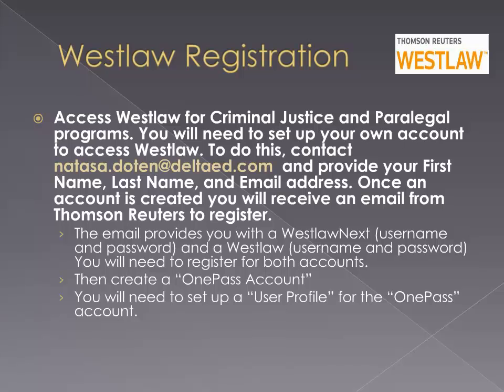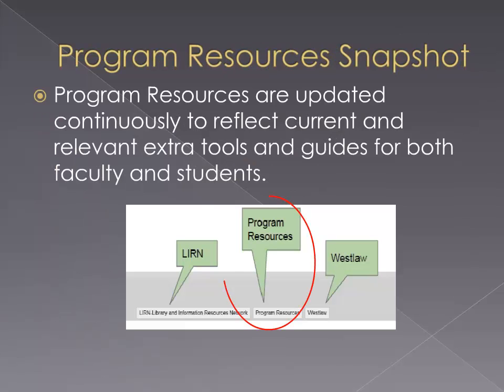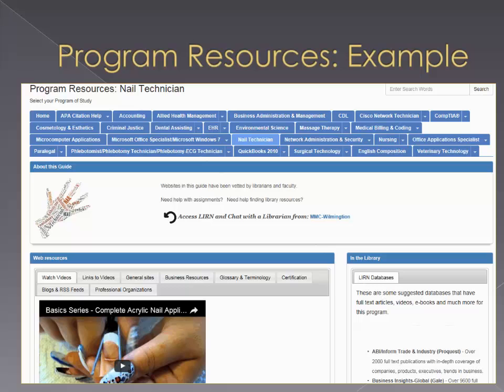Now that we have discussed all the research databases offered to you and our students, let's take a look at the program resources we have to offer. Program resources are updated continuously to reflect current and relevant extra tools and guides for both faculty and students. On the library website, the tab to view the program resources is shown here. As you can see, we have a list of all the programs offered in our institution. Each tab lists a program of study and includes information covering APA citation help and examples, videos both fun and instructional, career outlooks and opportunities, reliable websites to support the program of study, terminologies, blogs, tutorials, professional organizations, and much more.